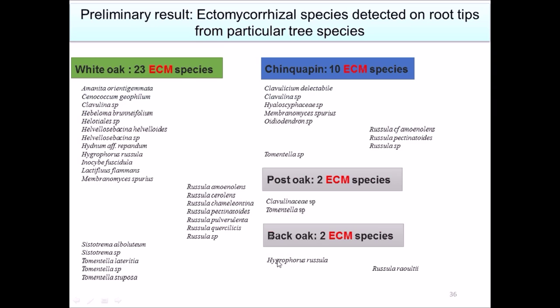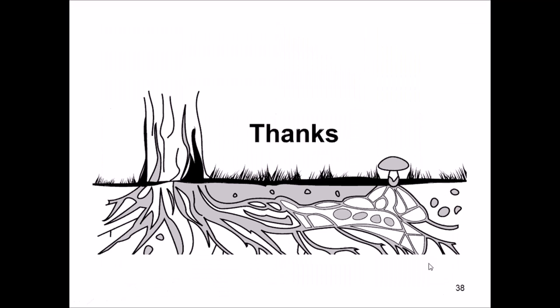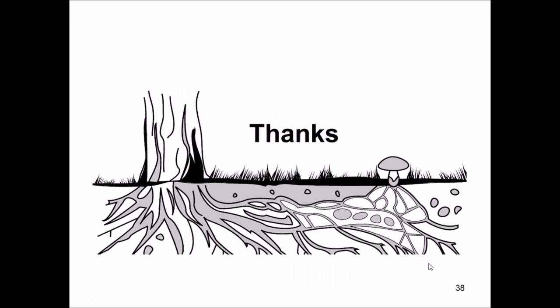Before finishing, I'd like to share some amazing pictures of ectomycorrhizal species found here in Arkansas — Russula, Amanita, Inocybe, and Hydna. Some species I identified to species level, but others only to genus level, like Russula species and Clavulina species. I'm continuing to work on obtaining good DNA and PCR results to identify fungi growing in association with these oak trees. I've shared my email and will be happy to answer any questions. Thank you for your attention.